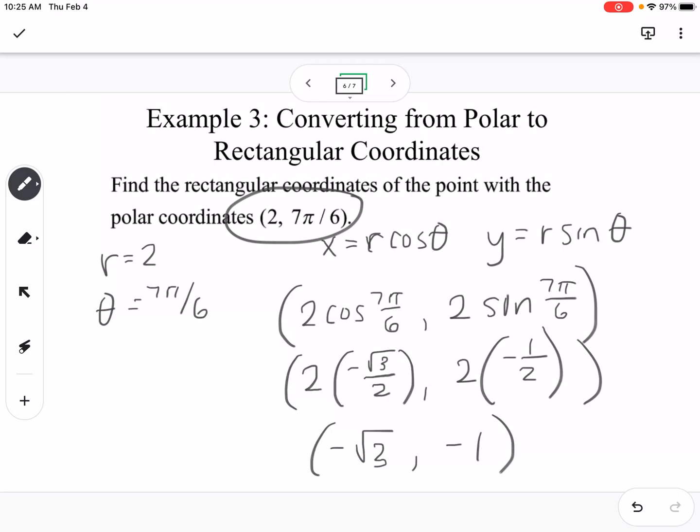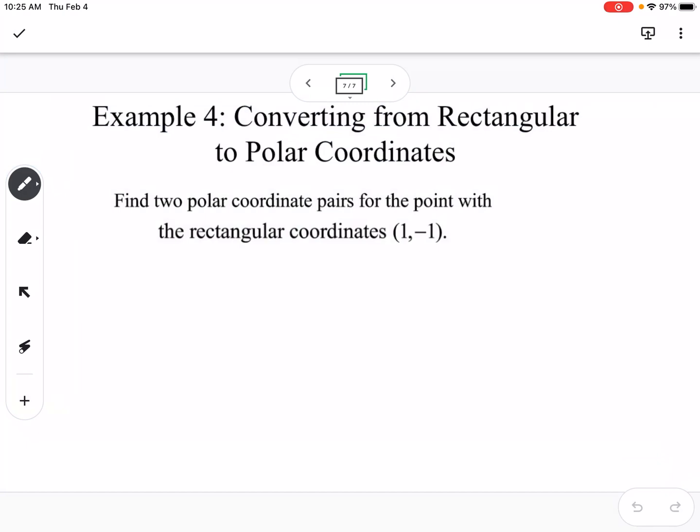So again, we took something in polar coordinates, and we put it into rectangular coordinates. Okay, so now the opposite direction of that is going to be a little bit more complicated. So we have the point 1, negative 1, so that means our X is 1, and our Y is negative 1. So we're going to use some of those other equations. So we know that R squared is equal to X squared plus Y squared. So this is 1 squared plus negative 1 squared. So R squared equals 2, which means that R is equal to positive and negative square root of 2.